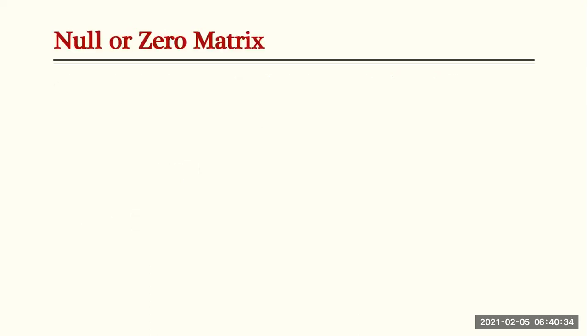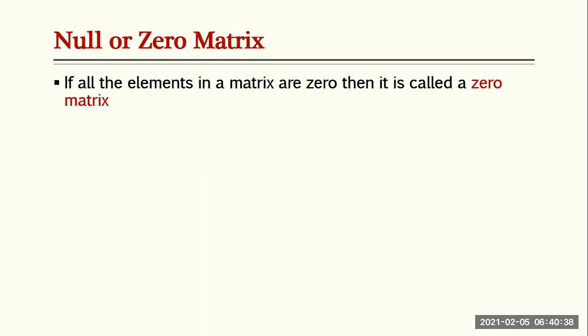The next one is the null or zero matrix. If all the elements in the matrix are zero, then it is called a zero matrix. It doesn't matter the order of the matrix — all elements are supposed to be zero. For example, matrices A and B both have all elements equal to zero, so they are null or zero matrices.